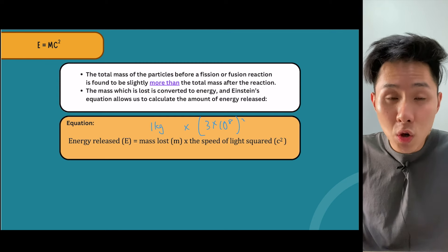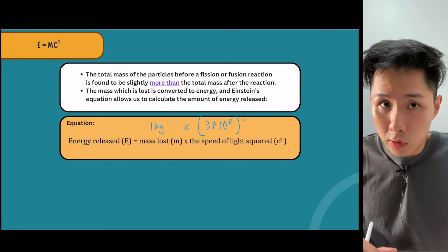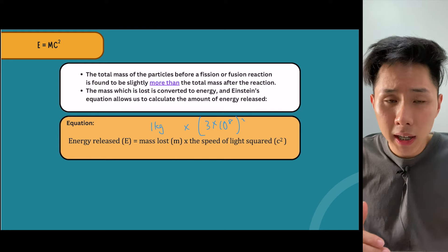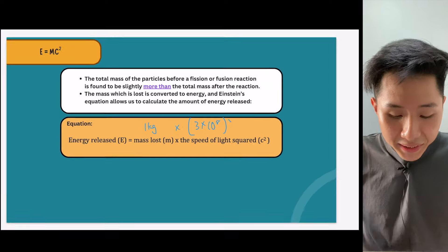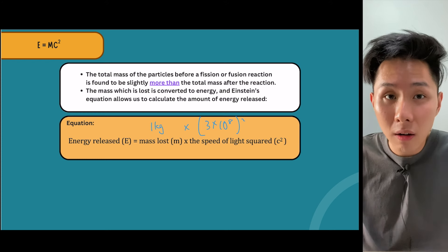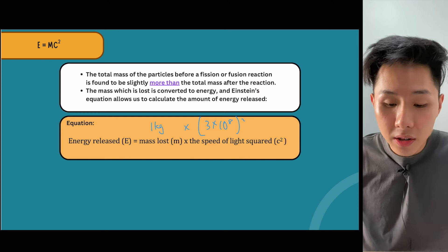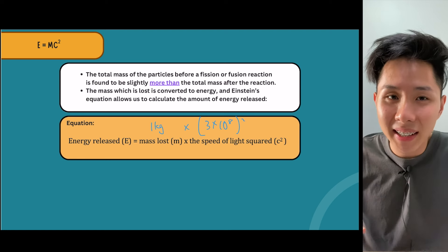In this video, we showed how the plum pudding model was first disproved by Rutherford's experiment, and we studied the different properties of proton, electrons, and neutrons. That's it for this chapter. In the next video, we'll look into how nuclear reactions release something called radioactive particles. I'll see you in the next video.